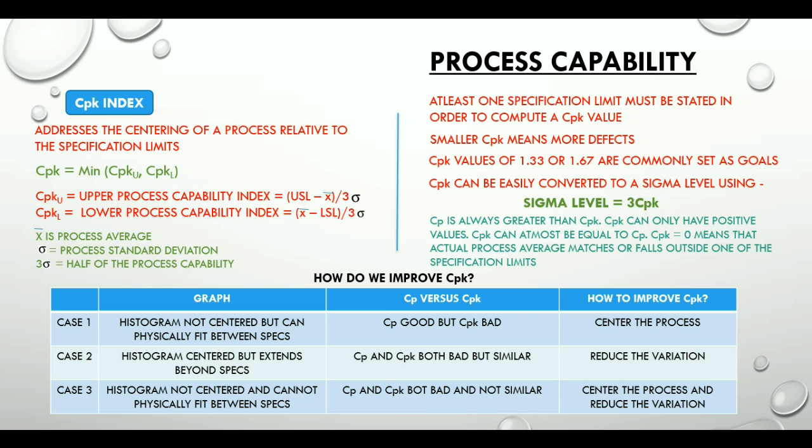And finally, let's visualize case 3 where the histogram is not centered and cannot physically fit between the specs. Where CP and CPK both are bad and they are not similar this time. So we should aim at centering the process and also reduce the variation.